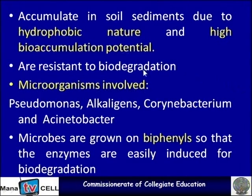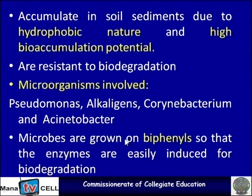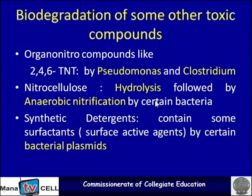The organisms involved in degradation of halogenated compounds are Pseudomonas, Alcaligenes, Corynebacterium, and Acinetobacter. Microbes are grown on biphenyls so that enzymes are easily induced for biodegradation.